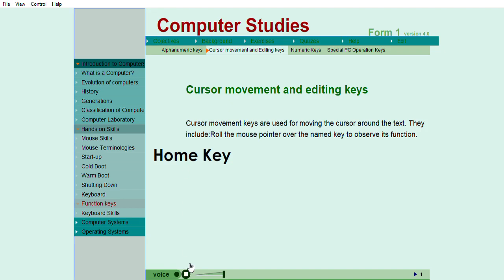Three, cursor movement and editing keys: Cursor movement keys move the cursor from one place to another on the display screen. The cursor is the indicator on the display screen that lets the user know where the next entry will be made.